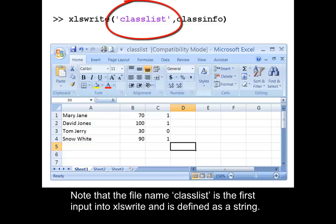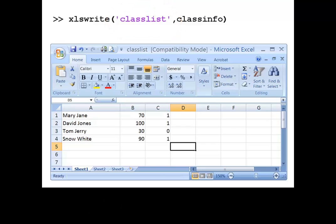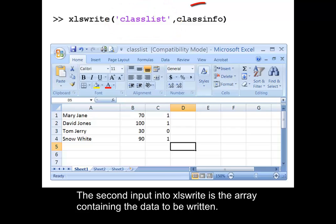Note that the file name classlist is the first input into xlswrite and is defined as a string. The second input into xlswrite is the array containing the data to be written.